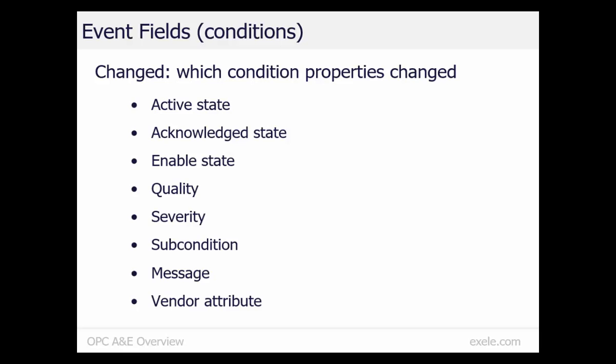Changed indicates which properties of the condition have changed to cause the OPC A&E server to send an event. The changed properties can include one or more of these: the active state, acknowledged state, enabled state, quality, severity, subcondition, message, or vendor attribute.